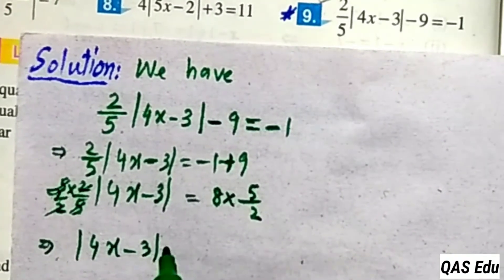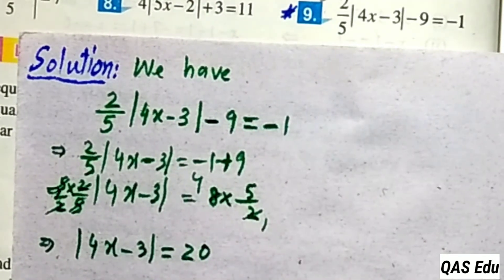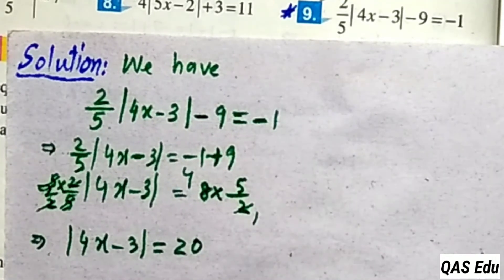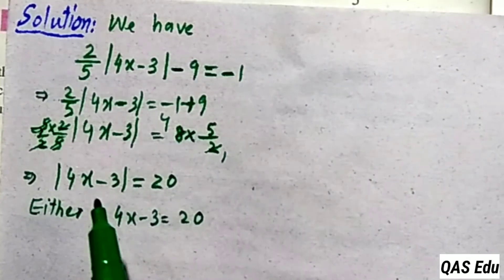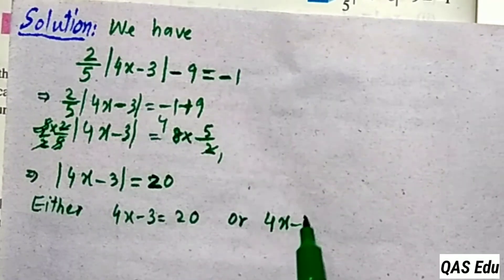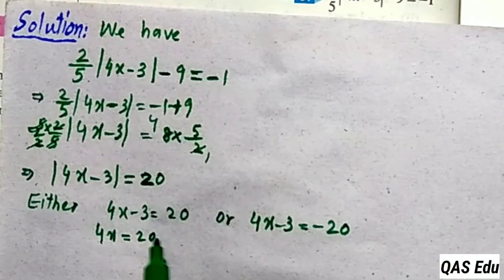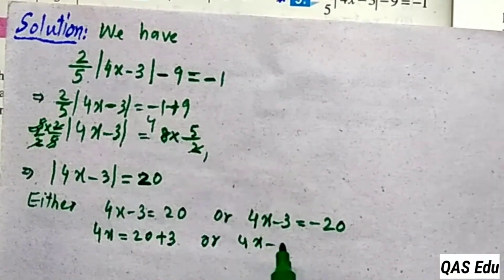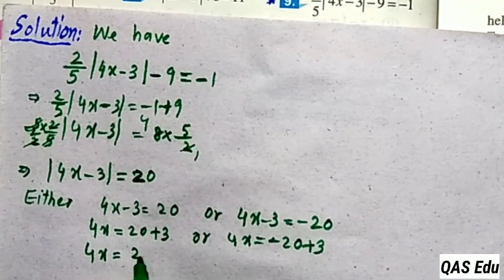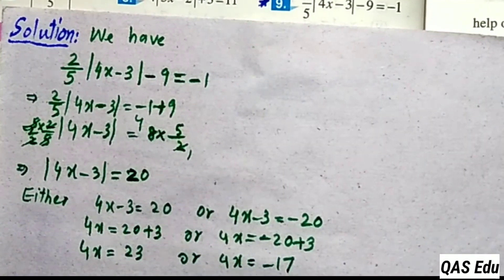Absolute value of 4x minus 3 is equal to: 2 ones are 2, 4s are 8, and 4 times 5 gives 20. So absolute value of 4x minus 3 equals 20. Two possibilities: either 4x minus 3 equals plus 20 or 4x minus 3 equals minus 20. Move minus 3 to the right as plus 3. For first: 20 plus 3 gives 23. For second: minus 20 plus 3 gives minus 17.